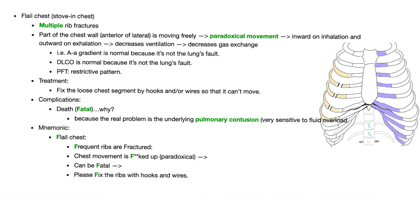This is a type of external restrictive lung disease. The AA gradient is normal because the lung itself is normal. DLCO is normal because the lung is normal. PFT shows a restrictive pattern.